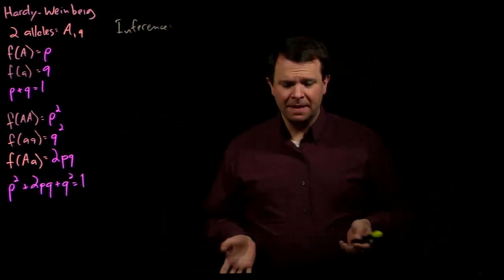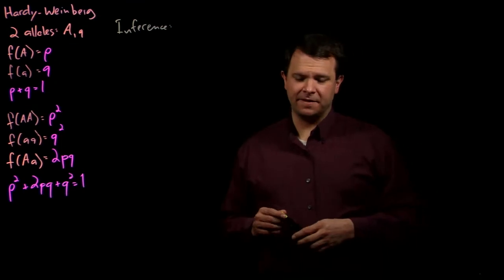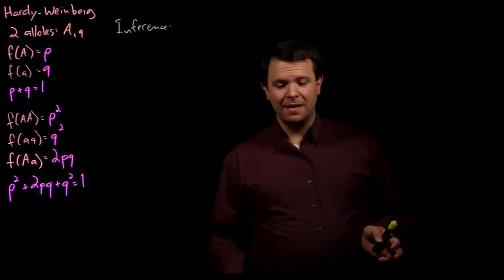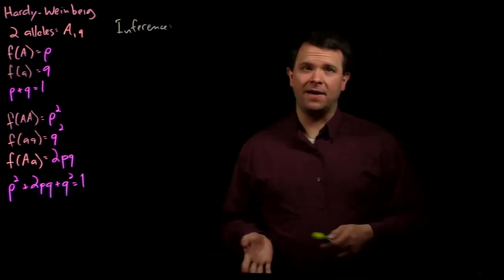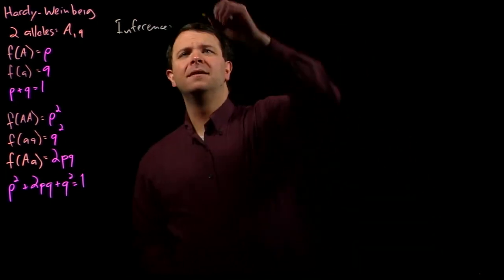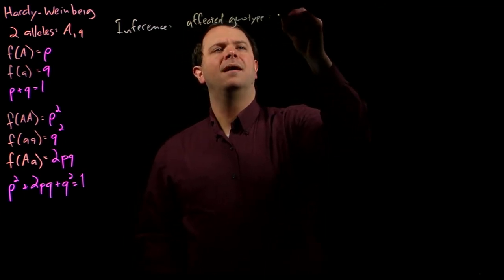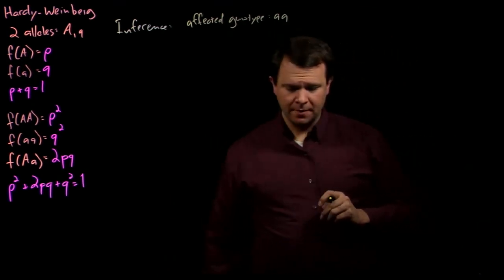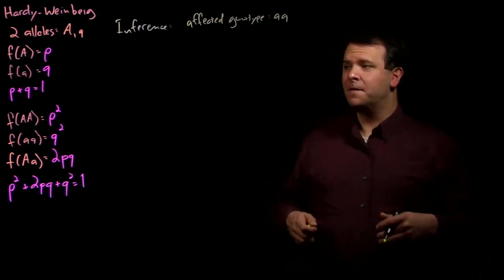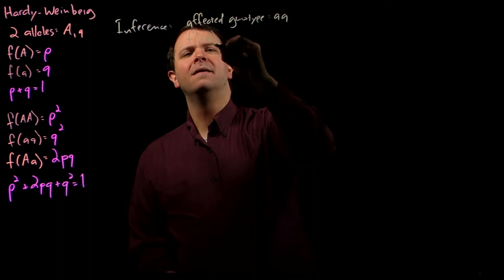For example, let's say that there's an autosomal recessive disease that affects 1% of the population. What proportion of the population is a carrier for that disease? Well, if we specify that this trait is autosomal recessive, then the affected individuals must have a genotype of little a little a. And so, we know that because 1% of the population is affected by this disease, we know that the frequency of little a little a is 0.01.